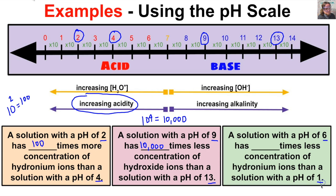Comparing a solution with a pH of 6 to a pH of 1: a pH of 6 is less acidic than a pH of 1. Counting the steps, they are five steps apart, so 10⁵ = 100,000. A solution with a pH of 6 has 100,000 times less the concentration of hydronium ions than a solution with a pH of 1.